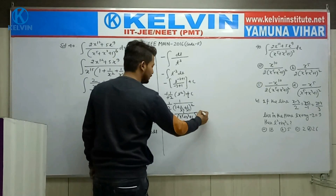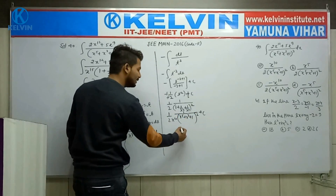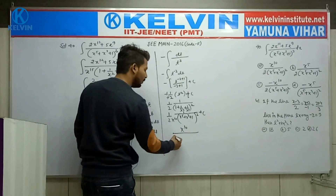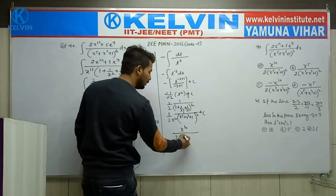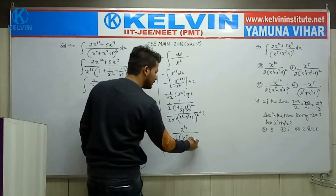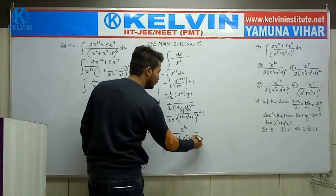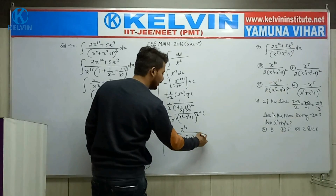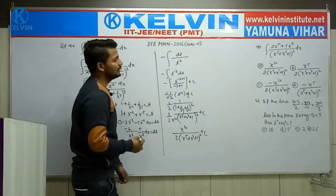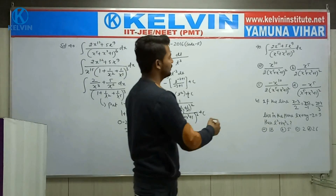Plus c. So the final answer is x to the power 10 upon 2, times x to the power 5 plus x cube plus 1, whole square plus c.